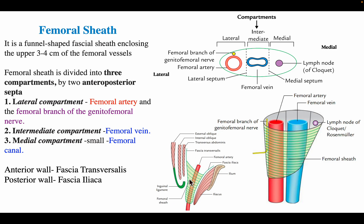The femoral sheath is a funnel-shaped fascial sheath enclosing the upper three to four centimeters of femoral vessels in the femoral triangle. It is divided into three compartments by two anteroposterior septa — the medial and lateral septa. The lateral compartment contains the femoral artery and femoral branch of the genitofemoral nerve; the intermediate compartment contains the femoral vein; and the medial compartment is the femoral canal, which contains a lymph node.